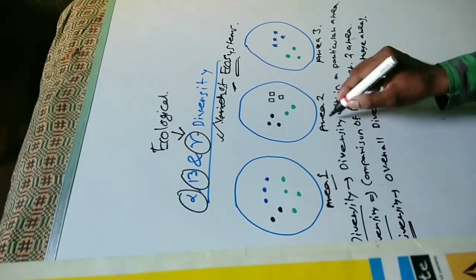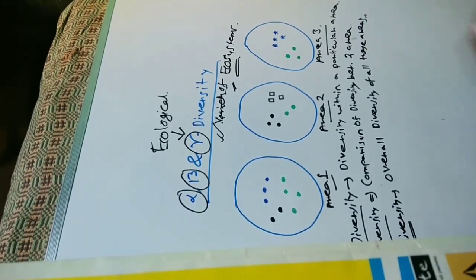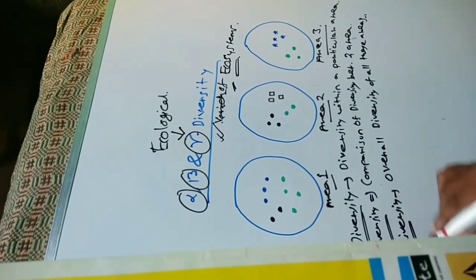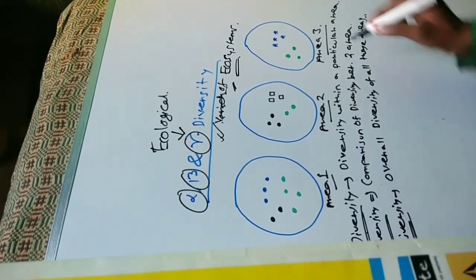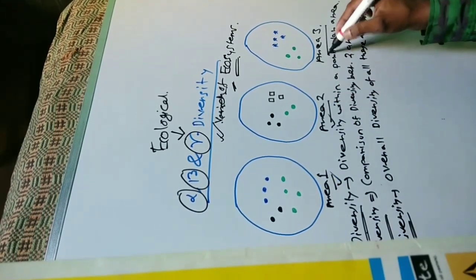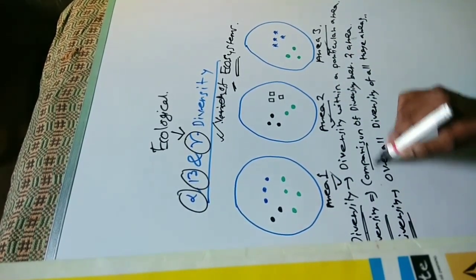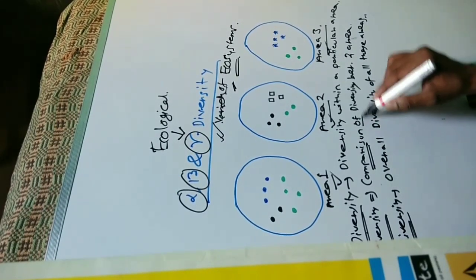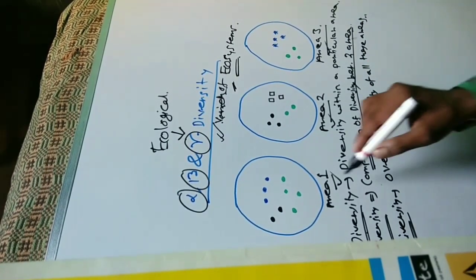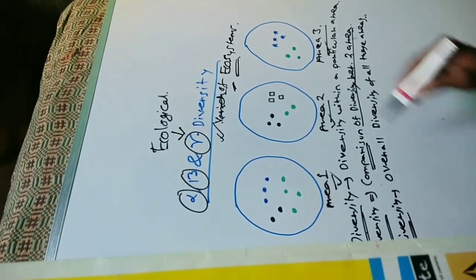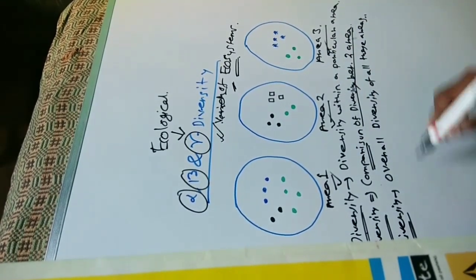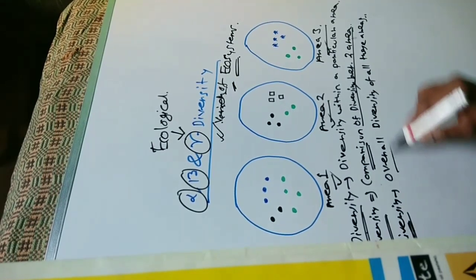That means area one, area two, and area three. So to summarize: alpha diversity means diversity within a particular area — this may be area 1, area 2, or area 3. Beta diversity is the comparison of diversity between two areas — area one and two, area one and three, or area two and three. Gamma diversity means the overall diversity of all these areas.